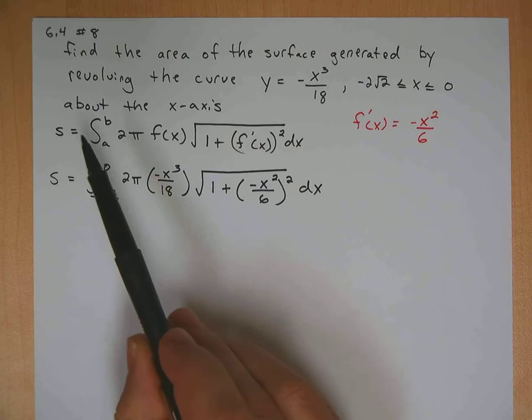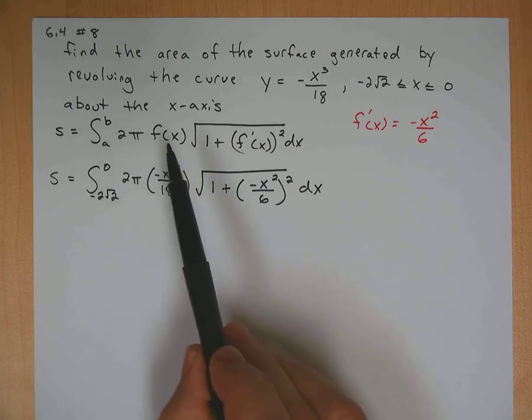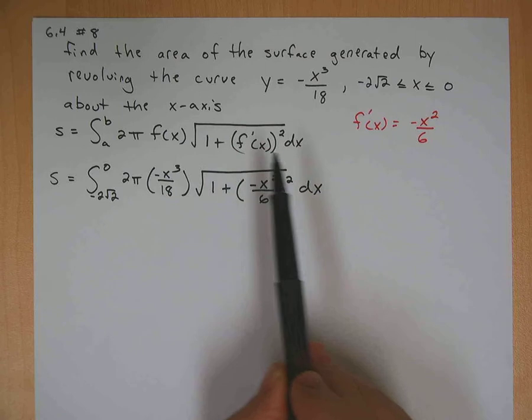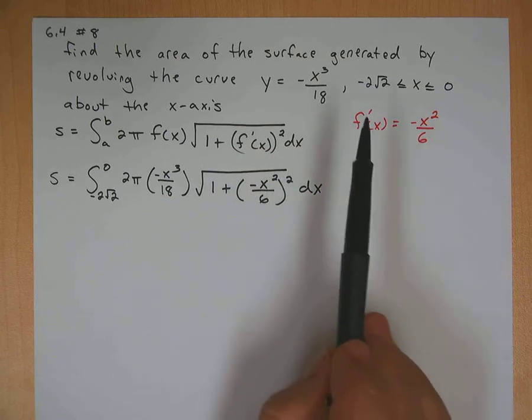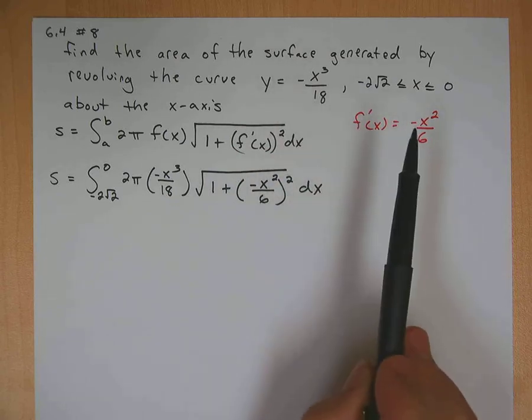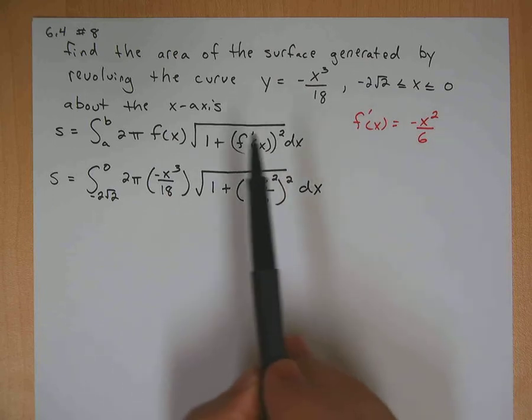Okay, so here's our formula, surface area formula. There's the function, the derivative of the function's in this square root. Okay, so I've got the derivative derived from this already. It's negative x squared over 6.